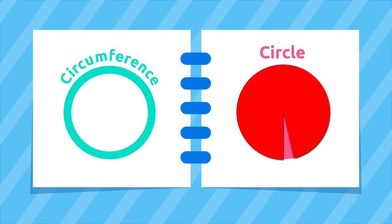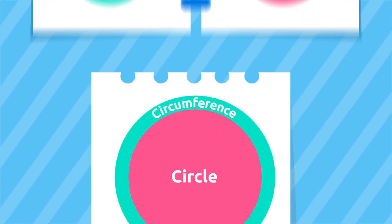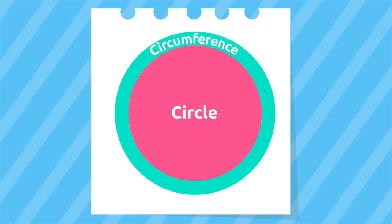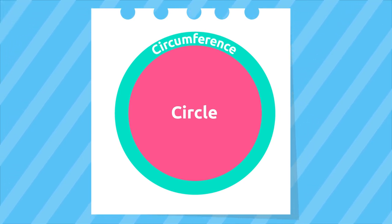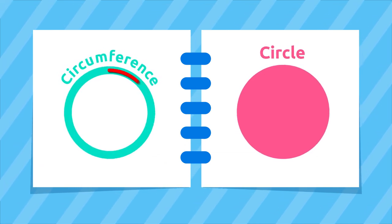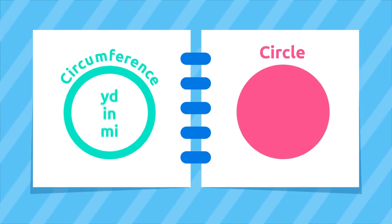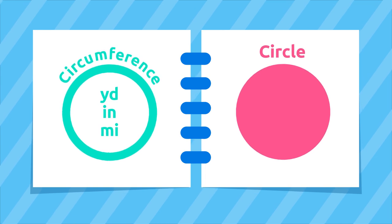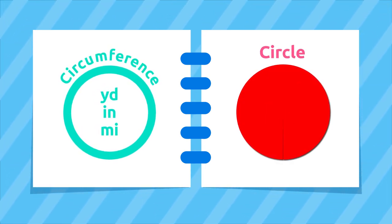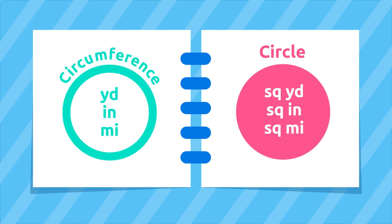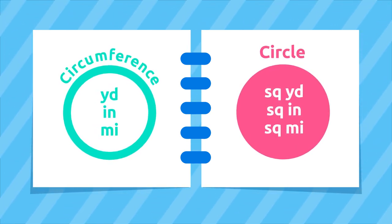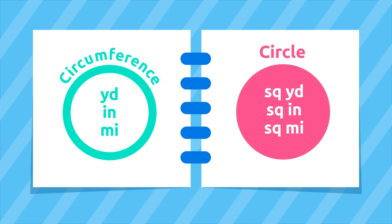The circle is everything the circumference contains — in other words, the circle is inside of the circumference. The circumference is a line, so we measure its length in yards, inches, or miles. The circle is a plane figure, so we measure its surface in square yards, square inches, or square miles.